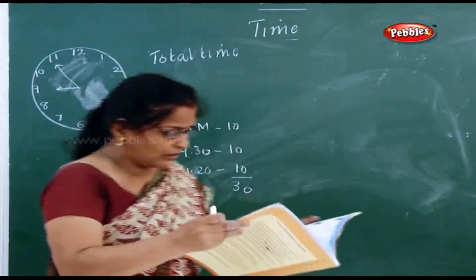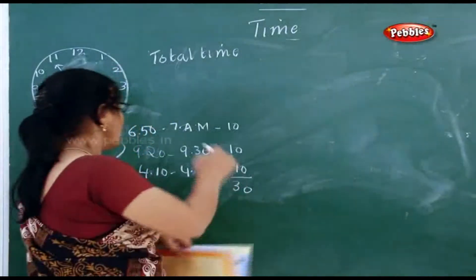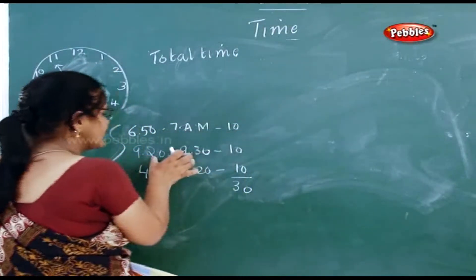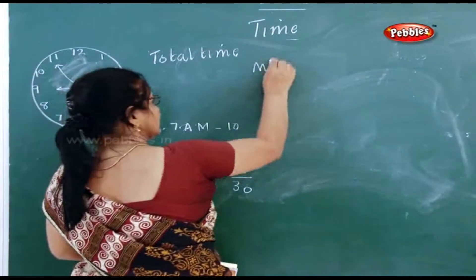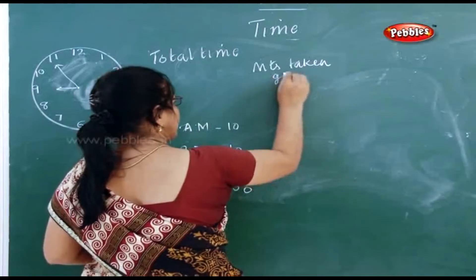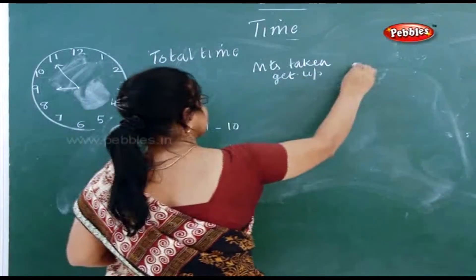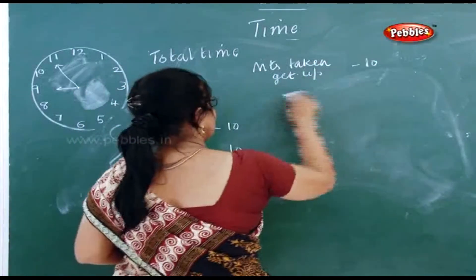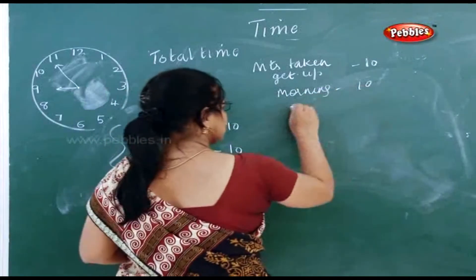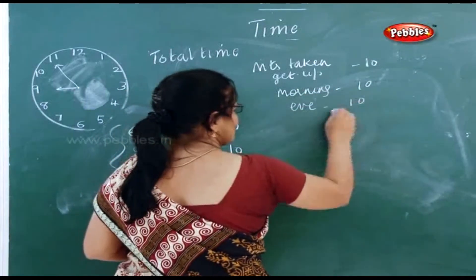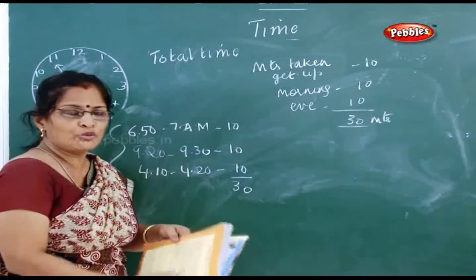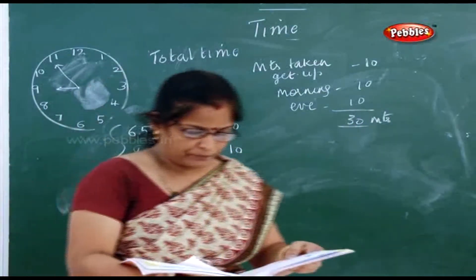You have to write clearly: minutes taken for prayer at getting-up time — 10 minutes; minutes taken at school morning prayer — 10 minutes; then evening prayer — 10 minutes. So you add them and get 30 minutes. This is how you do your second sum.